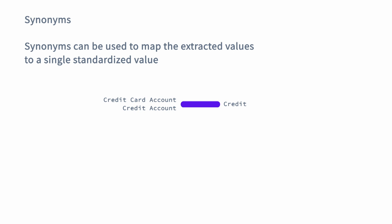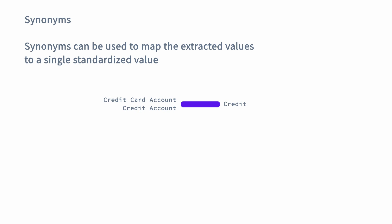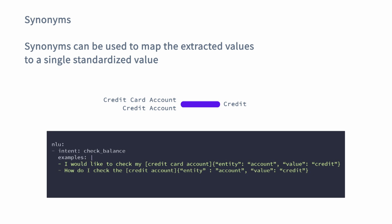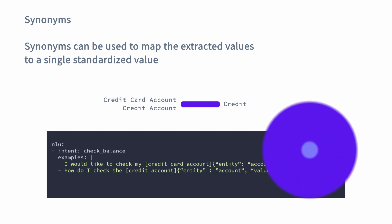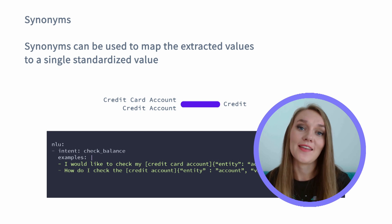There are two ways of how synonyms can be added to your Rasa assistant. One is by adding a new section to your nlu.yaml file called synonym. You have to define the actual value that extracted values will be mapped to, and then provide examples of how users might refer to that specific synonym. The second approach is by adding synonyms inline with your NLU training examples — all you have to do is add another parameter called value, which will reference the value that extracted entities will be mapped to. An important note: synonym mapping happens after entities are extracted, which means you will need some training data to enable your assistant to extract entities first.